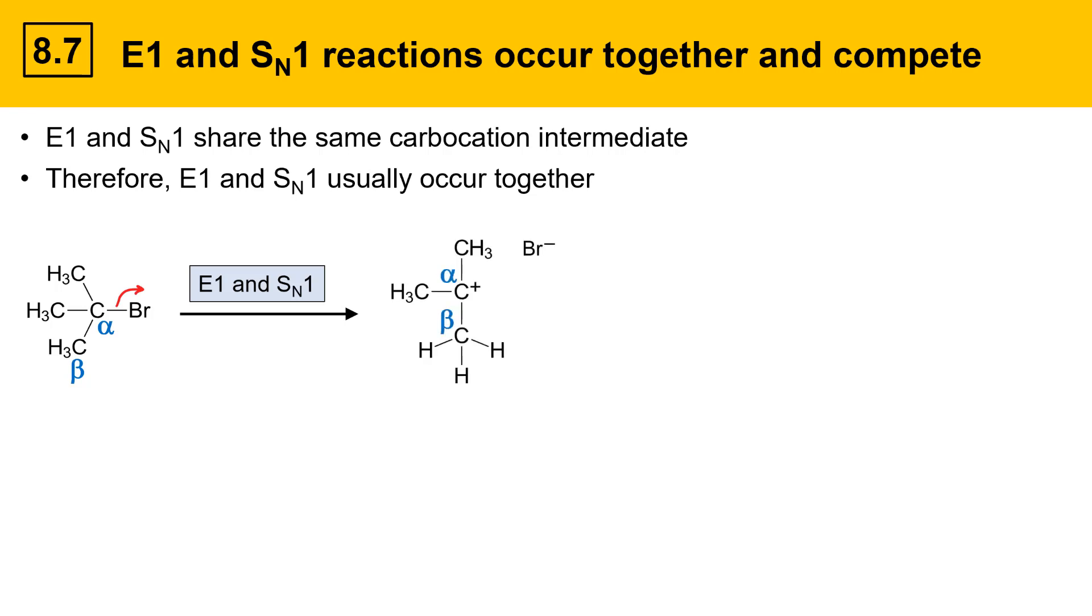Once the carbocation intermediate is formed, however, it can do a couple of different things. It might get deprotonated by a weak base, in this case water. Deprotonation in the beta position would give an alkene product, which has a double bond between the alpha and beta carbons, as well as a conjugate acid and the leaving group.